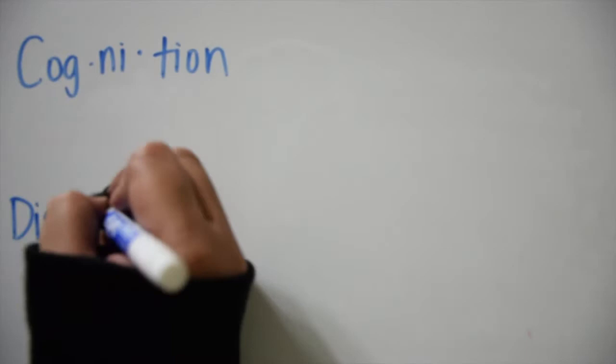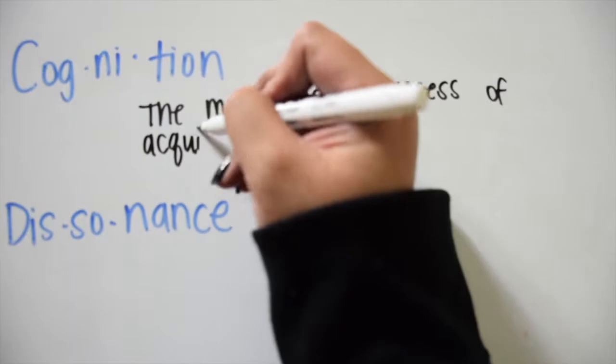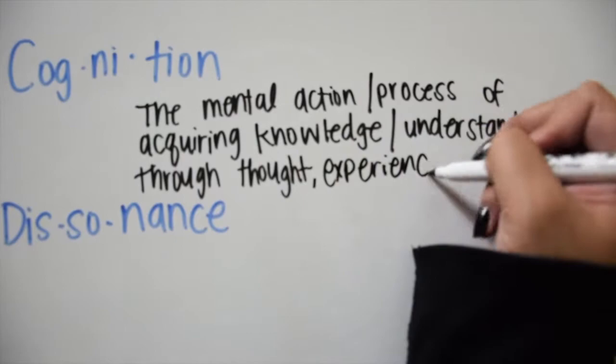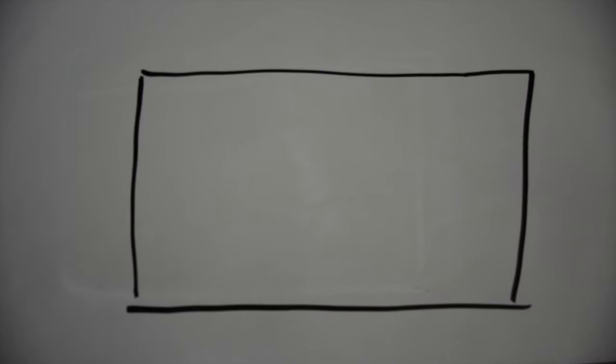Before we dive into the theory, let's define the two terms behind it: cognition and dissonance. Cognition is a mental action or process of acquiring knowledge and understanding through thought, experience, and the senses. Dissonance is the instance of inconsistency or disagreement. Festinger said humans have a tendency to rationalize their actions or change their attitude in order to alleviate their feelings of cognitive dissonance.